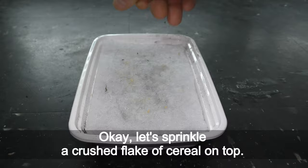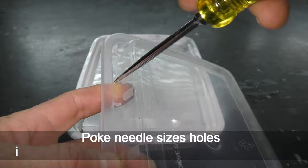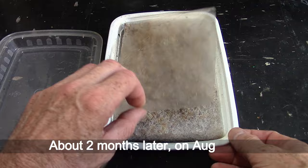OK, let's sprinkle a crushed flake of cereal on top. Cover it all with a piece of plastic. Now I have to fix the cover for the box. Poke needle size holes in the groove of the cover to allow air circulation. Cover the box. I feed grindal worms once a day.